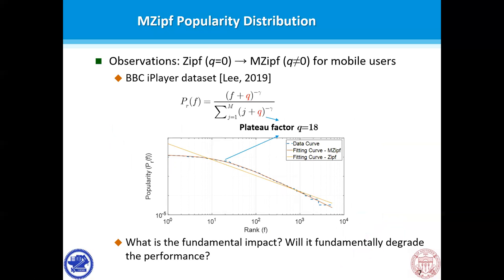One of the essential properties leading to the benefit of the cache-aided D2D network is the concentrated popularity distribution, which is commonly assumed to follow a Zipf distribution. However, it is observed from real data that the popularity distribution for mobile users is not a Zipf distribution but an n-Zipf distribution. The main difference between a Zipf and n-Zipf distribution is that the n-Zipf distribution has a plateau regime characterized by a plateau factor. Since the shape of the popularity distribution can significantly influence performance, we are wondering what the fundamental impact is when changing from the Zipf assumption to the n-Zipf assumption, and whether this will degrade the performance of the cache-aided D2D network.